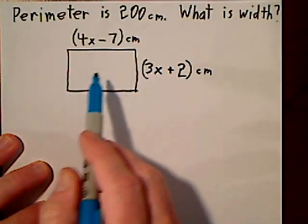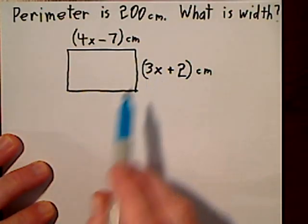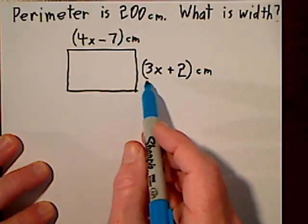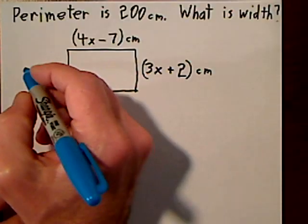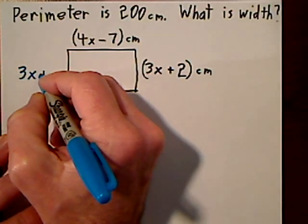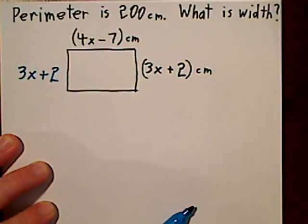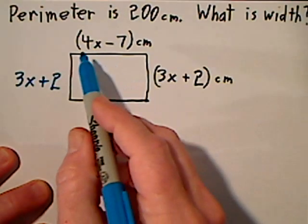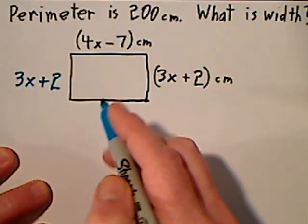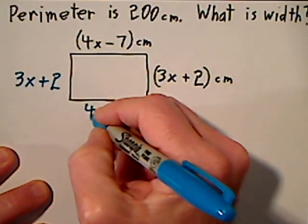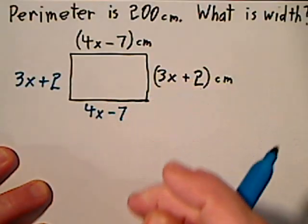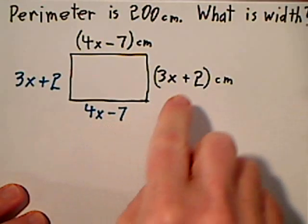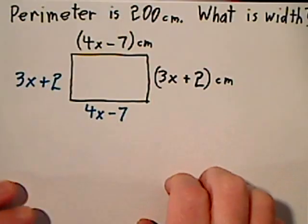What we'll do is set up an algebraic equation and solve for x. But before we get there you have to understand that if this side is 3x plus 2 then this side must be 3x plus 2, and if this side is 4x minus 7 then this side must be 4x minus 7. And if we add up these four sides it's going to equal 200.